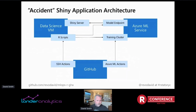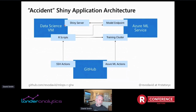The Shiny app I showed has this architecture: all the code is sitting in GitHub, and I've written an action in GitHub to control the Azure Machine Learning Service — for example to generate a training cluster for training models. I've also set up actions that SSH over to a virtual machine where we're running the Shiny server, and because it already has R installed it's a convenient place to run R scripts. Those scripts access Azure Machine Learning to kick off model training, and once models are trained, create an HTTP endpoint — a URL we can plug into the Shiny server to deliver predictions.